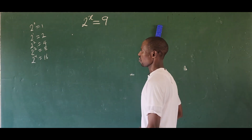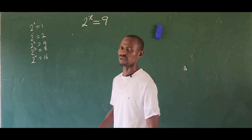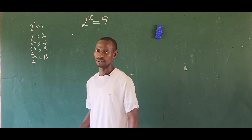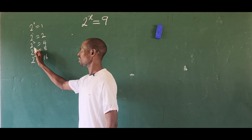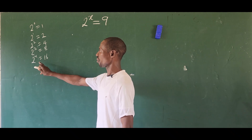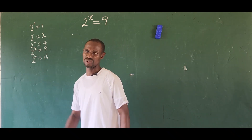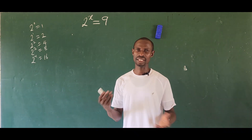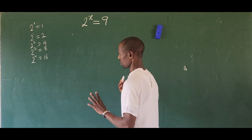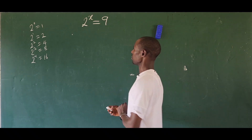Then two to the power of four gives us 16. So what does that imply? It means the value of x is going to fall within three and four, but closer to three, because we have eight and sixteen. So between three and four the value will be closer to three — something like three point seven or so. How do we get this answer is the aim of this video.